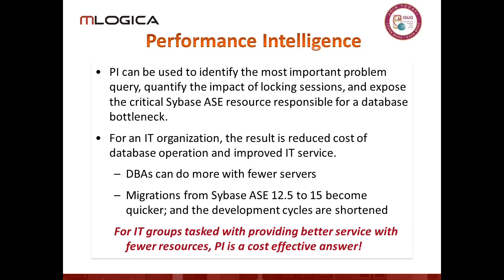Gartner group studies show that mean time resolution for performance issues follows the typical 80-20 path — 80% is identifying what the problem is, and then 20% is figuring out how to solve it and roll it out. If you can eliminate that 80%, you become really responsive. If you're doing proactive work, it's cool to be working on a performance issue, have a user call and say they've got a problem, and be able to say: yes, I actually know about that and I'm working on it right now.